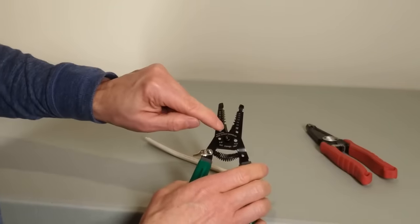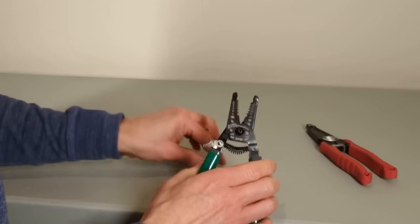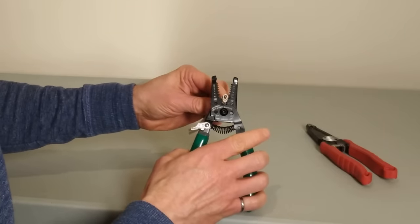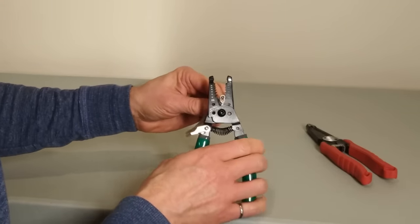Mistake number five is using the small cutters to try to cut the entire Romex wire. These wire strippers do have a blade here at the base, but you'll notice it's not very big, and if you were to try to cut the entire piece of Romex, it won't actually cut through.